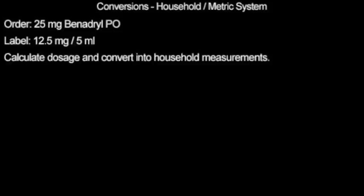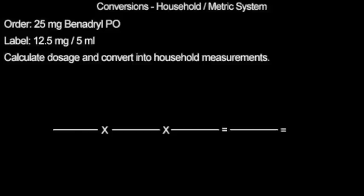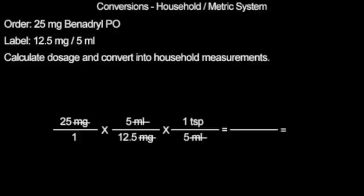There is an order for 25 milligrams of Benadryl. The label states that there is 12.5 milligrams of Benadryl for every 5 milliliters. We are supposed to convert our dosage into household measurements. We start our equation with our 25 milligrams of Benadryl and our 12.5 milligrams for 5 milliliters. We convert into household measurements with 1 teaspoon equaling 5 milliliters. We cancel like terms and multiply across. We are left with 125 teaspoons over 62.5. Divide and we are left with 2 teaspoons, which is our correct dosage.